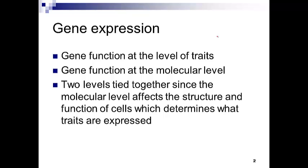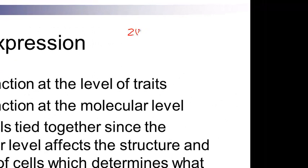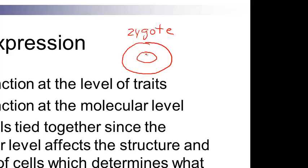This is also a topic I'm really interested in because it really is at the forefront of what makes us who we are. We all have, at some point in our life, been a single-celled individual. At some point you were a zygote, and the DNA supplied by the sperm and the egg created a diploid genome where all our chromosomes come in pairs — that information originated from our parents.